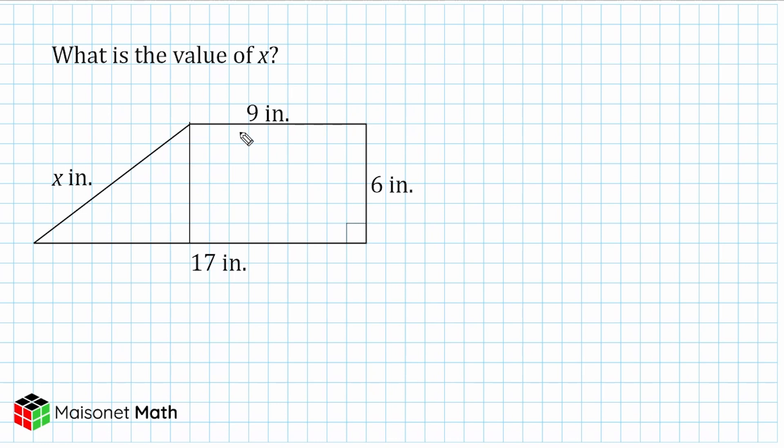Now, by doing this, what we should notice is that we have an edge of a rectangle that is nine inches, which means the opposite edge is going to be nine inches. So from this point to this point, we know that it is a distance of nine inches. Now, from this point all the way to this point, we can see that we have a distance of 17 inches. So the distance from this point to this point must be eight, because eight plus nine more is equal to 17 inches.